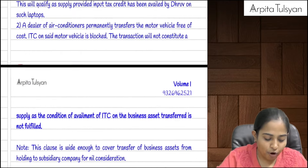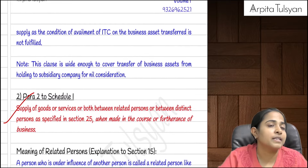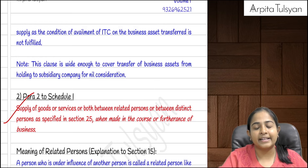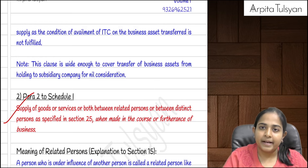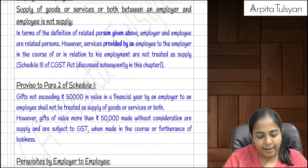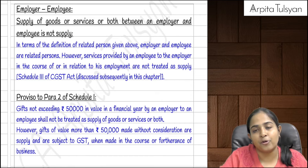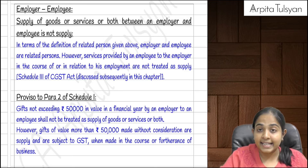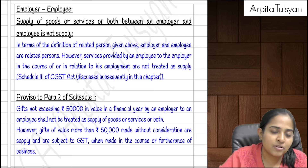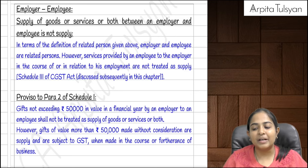Conclusion of Para 2 of Schedule 1: if there is any supply of goods or services between related persons, or between distinct persons, or between establishment of distinct persons, done in the course of business, it will be considered a supply. Regarding employer and employee — even though they are related persons under Schedule 1, Schedule 3 comes in and says employer-employee transactions are not considered a supply.